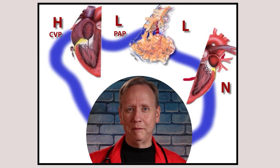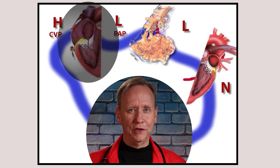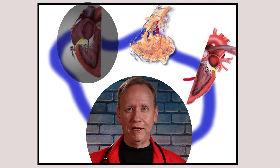After labeling each value, look for a certain pattern as you go through them in order. You're looking anywhere in the system where it goes from high to low, or high to normal — either one of those patterns. So if CVP is high and then PAP is low, that goes from high to low. What's in between those two things? That would be the right heart, and that would tell us there's a problem in the right heart.